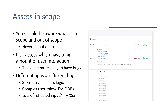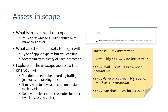Different apps have different bugs. If you've got a store, you can try business logic. If you've got a lot of complex user roles — especially admin, manager, user, and guest — you can try and find IDORs there. That's also the case for anything that has a lot of resources. If there's lots of reflected input like a form, you're looking at cross-site scripting. If you've got a specific bug you want to find or are really good at finding, you can start to choose assets based on that.